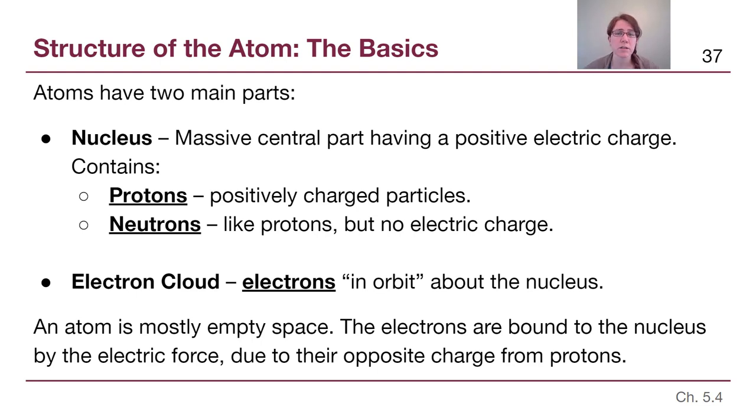So in the nucleus, the massive central part of the atom is where we can find all of the protons and the neutrons in an atom. And we'll be talking about in the next couple of slides, the number of protons and the number of neutrons affect how we think of atoms and what we call them. And then electrons are outside of the nucleus, and they are far away from the nucleus on kind of atom size scales.